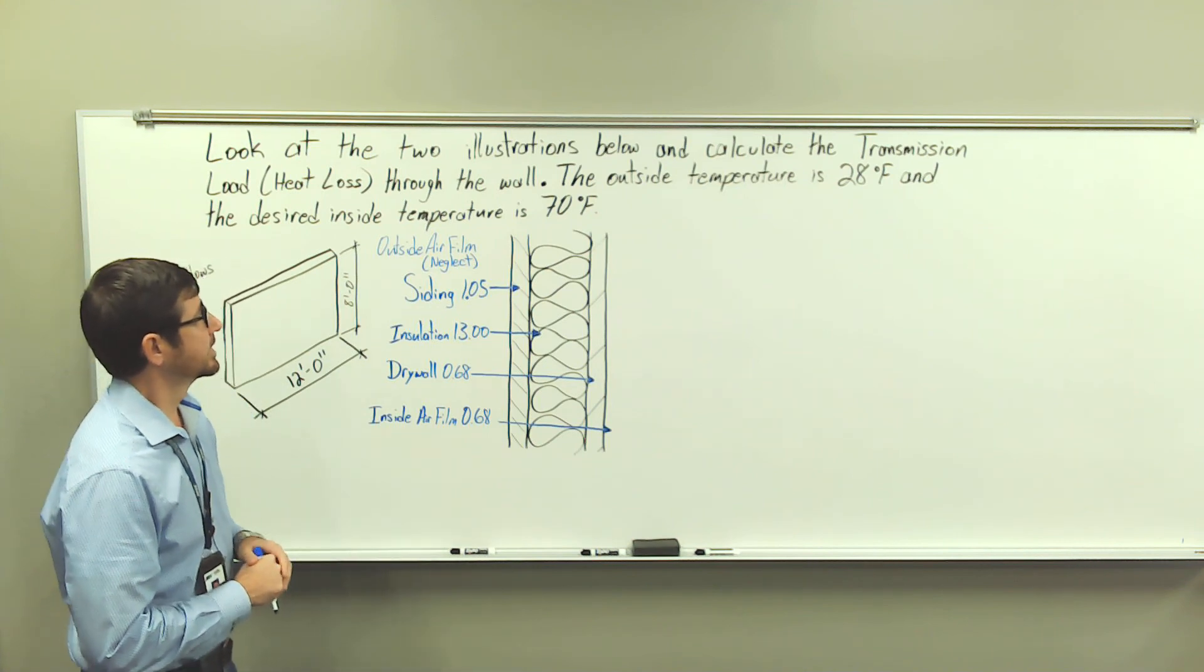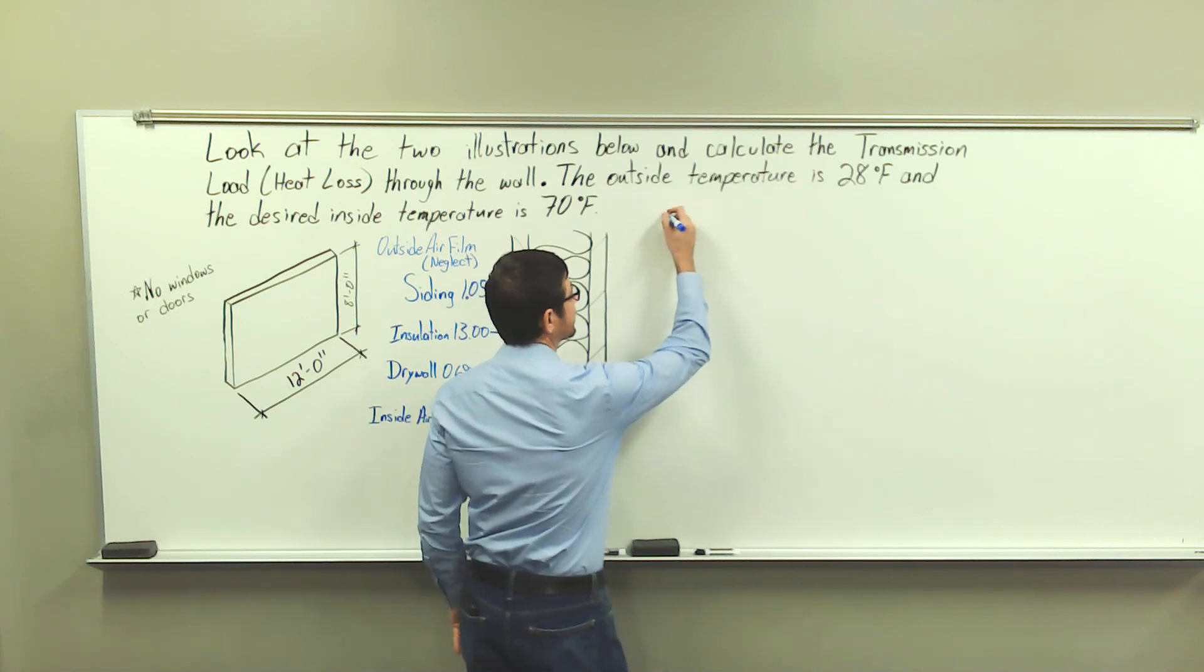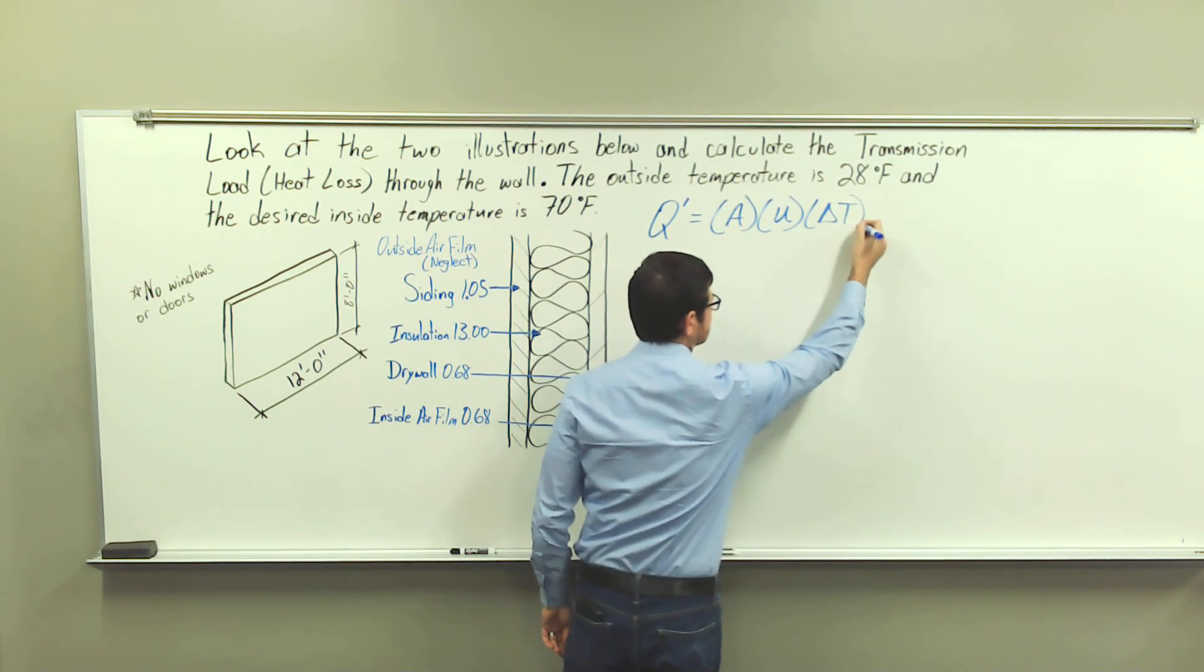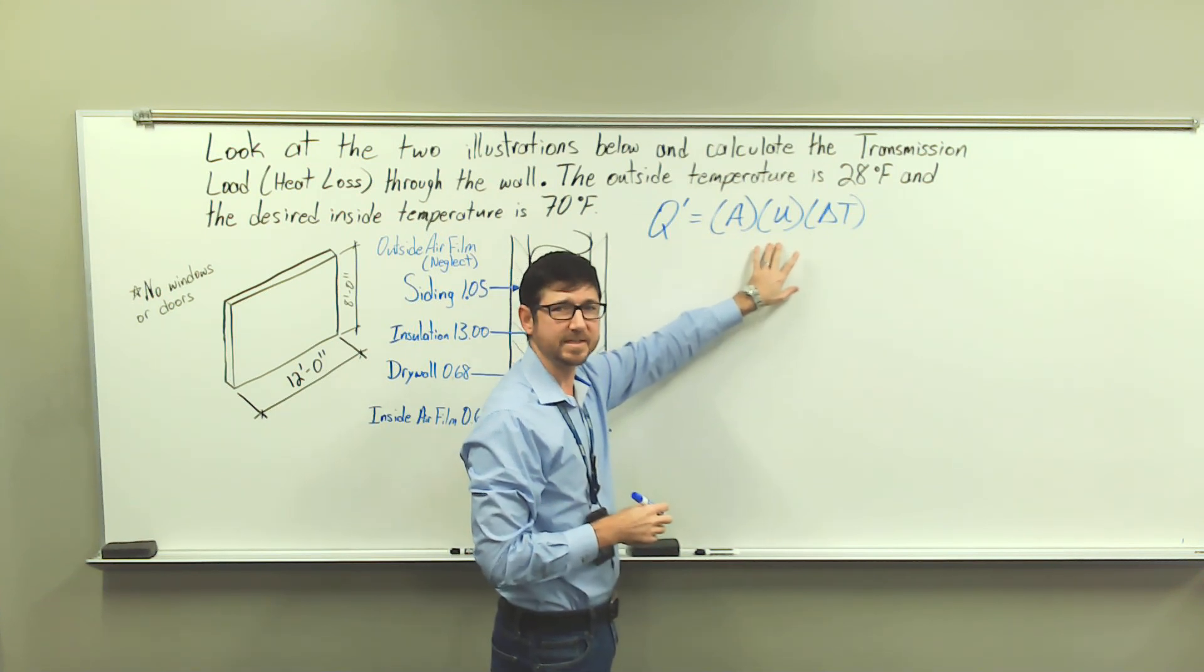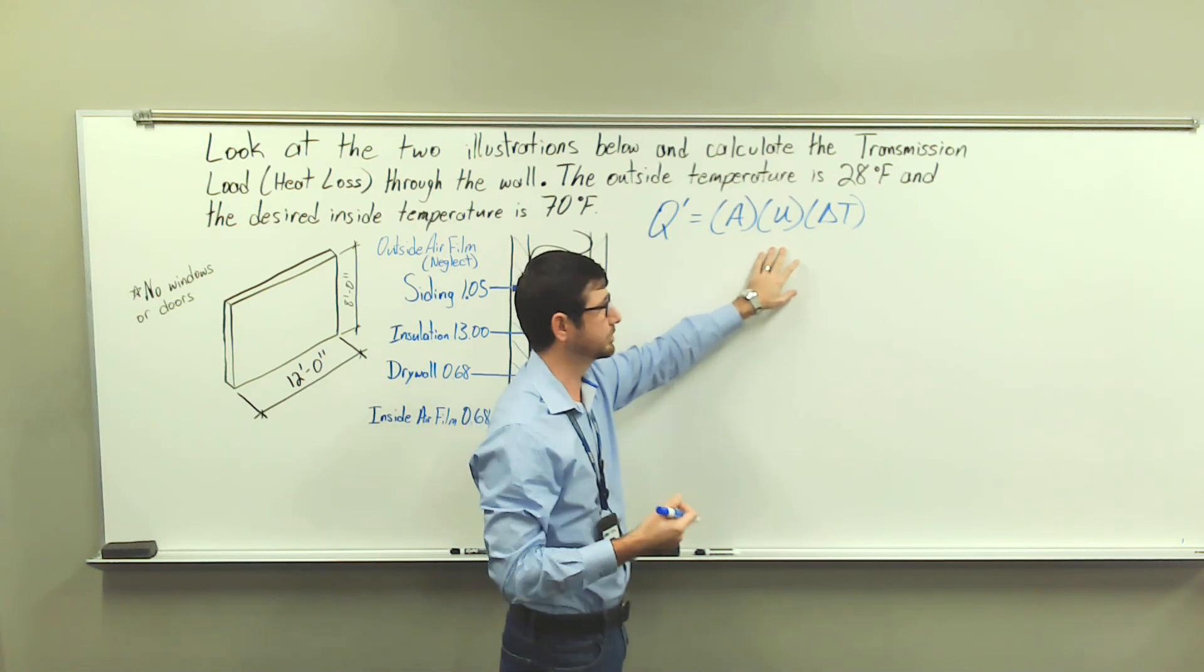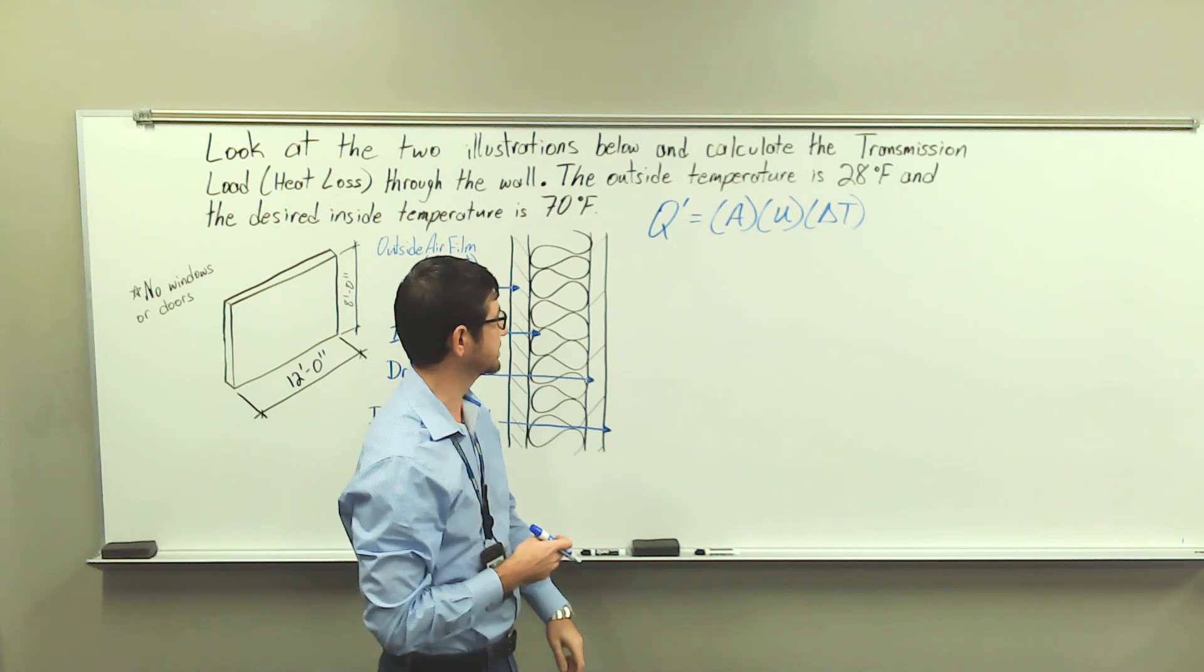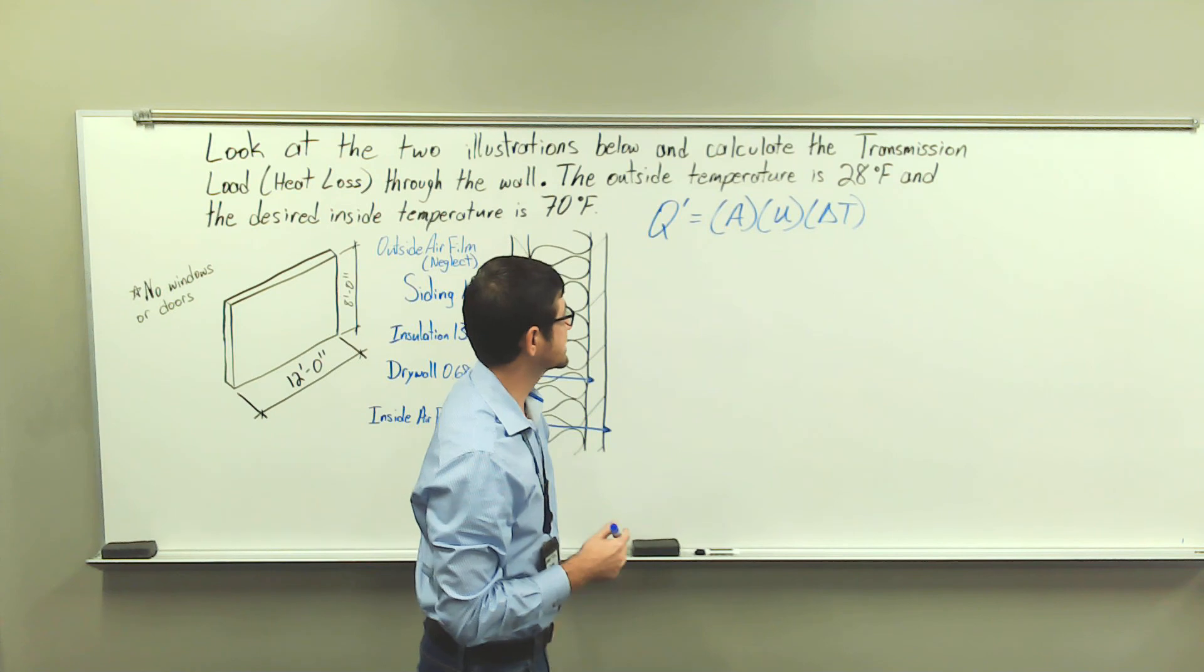Okay, so the equation to calculate the heat loss is Q' equals A times U times delta T. So A is the area of the wall, U represents the U factor which is the inverse of the total R value, and delta T represents the difference in temperature between the outside and inside temperature. So let's just go ahead and generate our three values here.